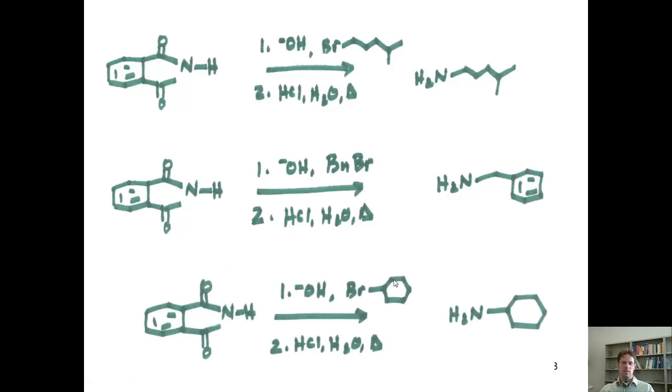The last one is to treat phthalimide with hydroxide and cyclohexyl bromide, followed by HCl, water, and heat, to liberate my primary cyclohexylamine as the major product.